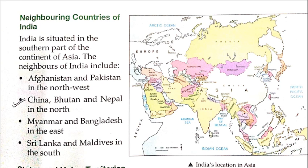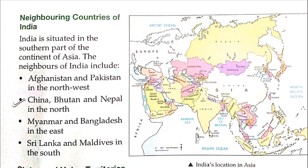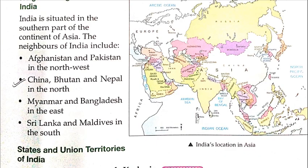India, which is our country, is in the south of the Asian continent — you can see this area on the map. India is situated such that its neighbors include Afghanistan and Pakistan in the north-west.